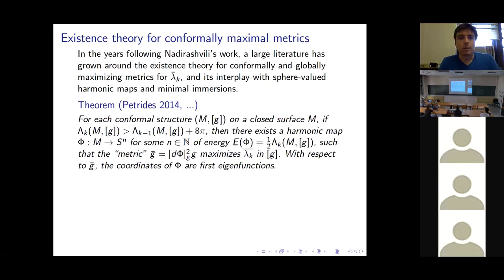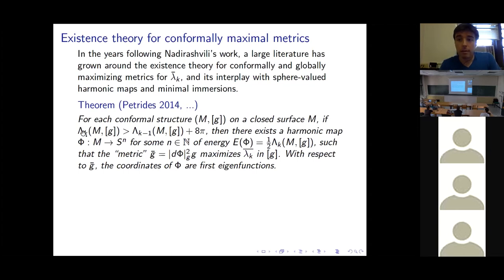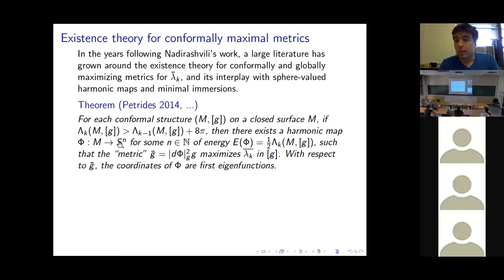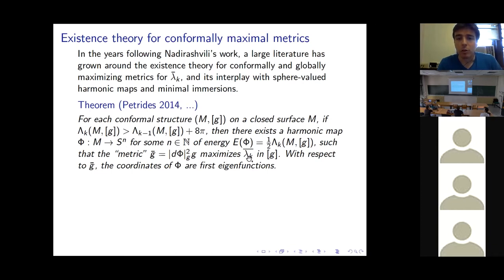Focusing on the conformal problem: the first major positive result, due to El-Souffi and Ilias around 2014, states that for each conformal structure on a closed surface, if the k-th conformal supremum eigenvalue is strictly greater than the (k−1)-th plus 8π — and non-strict inequality always holds — then there exists a harmonic map into Sⁿ whose energy is exactly half the k-th eigenvalue, and a conformal metric whose energy density is constant that maximizes the normalized k-th eigenvalue in the conformal class.